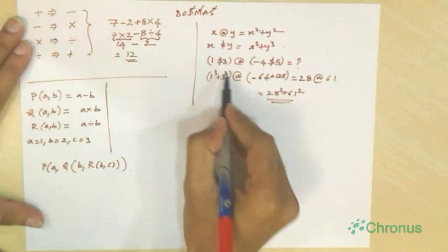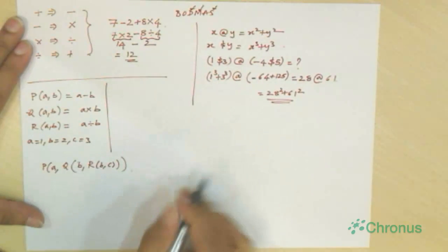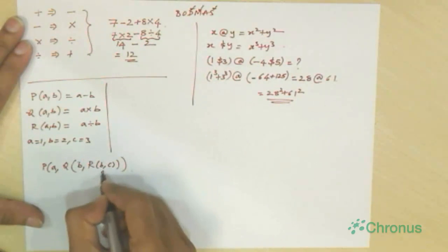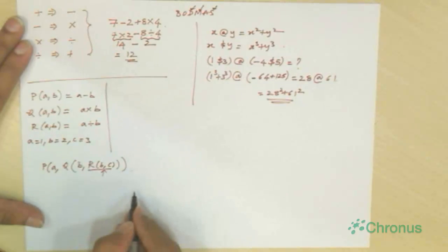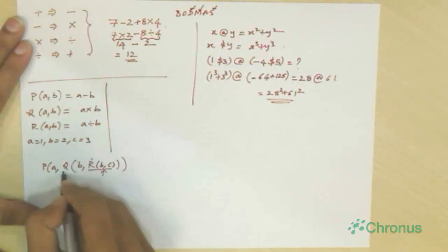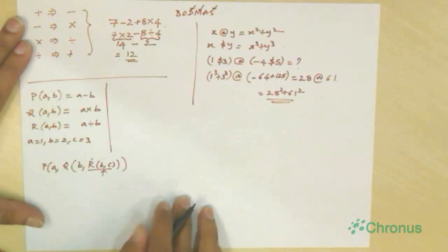And as we discussed in the previous problem, we solve by parts. So go to the innermost part. So we first solve r of b comma c. Then substitute the value here. Then find p of b and the obtained value. Then substitute that value here, and then find p of a in the latest obtained value.